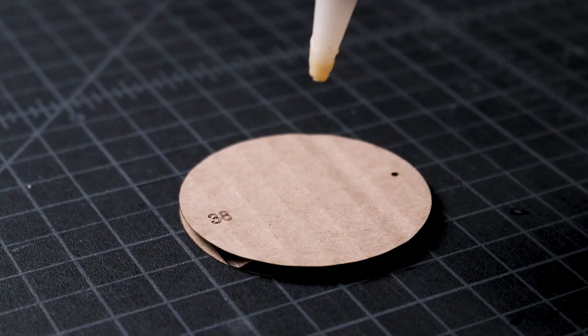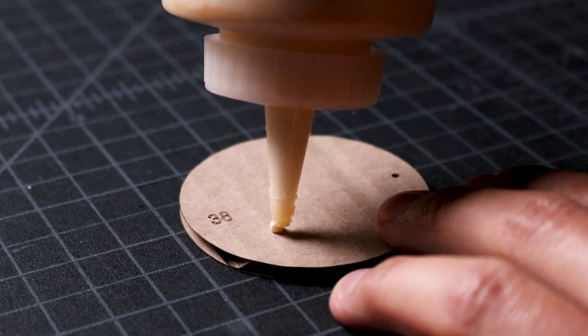I turn over the smaller piece so that the number faces up, bring over my wood glue, and apply it throughout the piece.